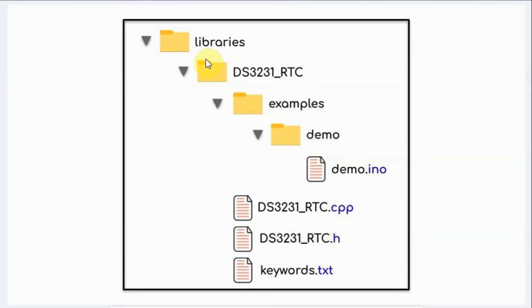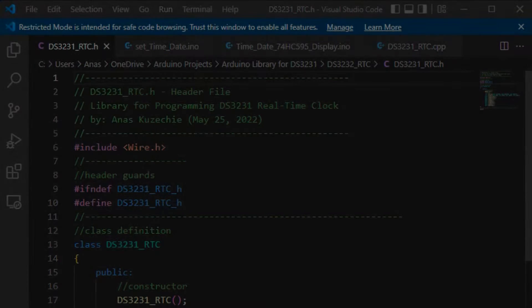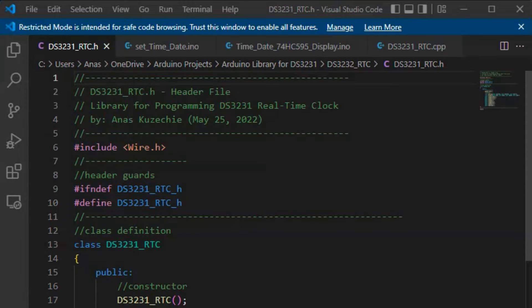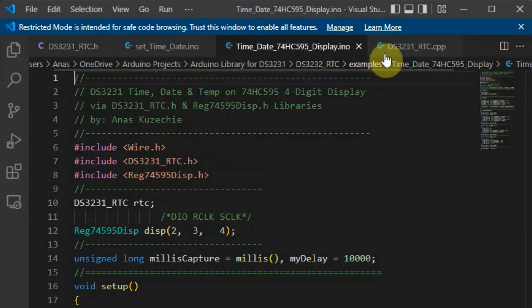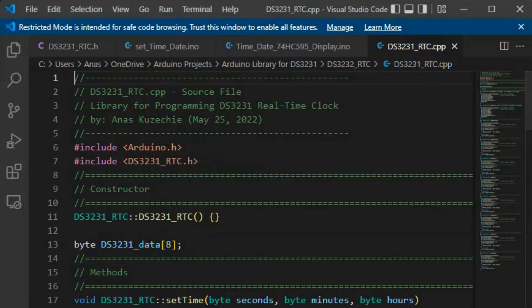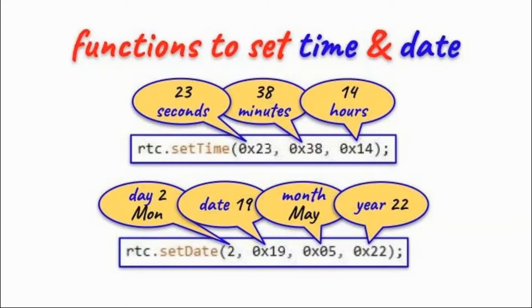Our library is contained within the Arduino libraries folder. The name of the library is DS3231_real_time_clock, which contains the examples folder and the source, header, and keywords files. Microsoft Visual Studio Code is used to create the header file, source file, and the sketches available in the examples folder.